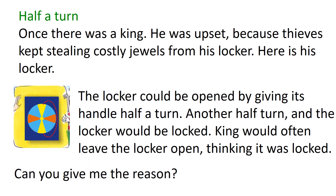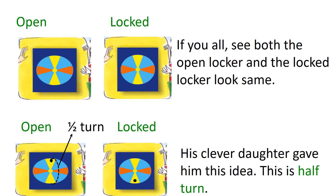Half a turn. Once, there was a king. He was upset because thieves kept stealing costly jewels from his locker. The locker could be opened by giving its handle half a turn. Another half turn and the locker would be locked. The king would often leave the locker open thinking it was locked. Half a turn means moving from the top yellow portion to the bottom yellow portion — that is half a turn. You can see two lockers here, open and locked, and both look the same. So, the king never came to know when his locker was open and when it was locked.